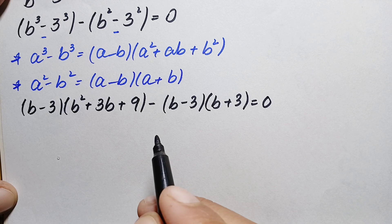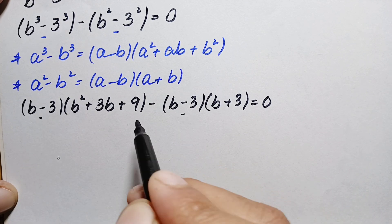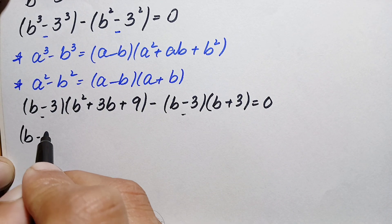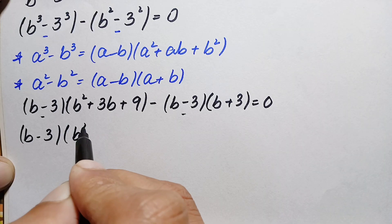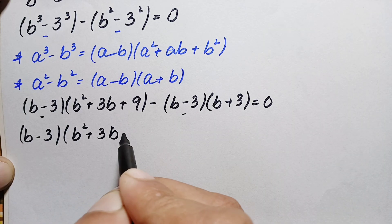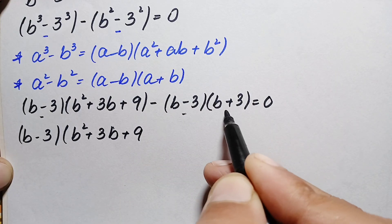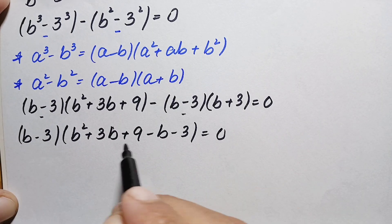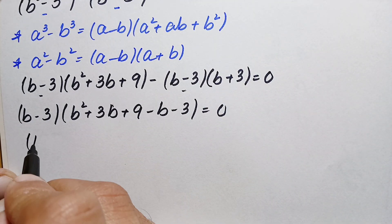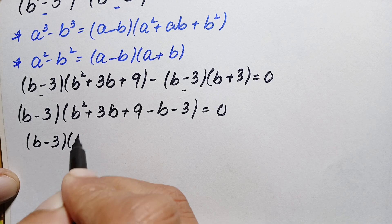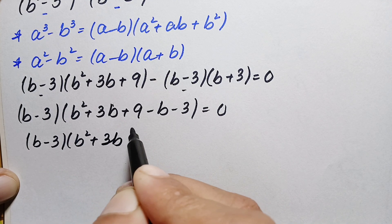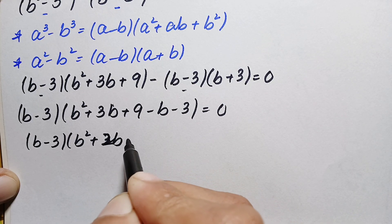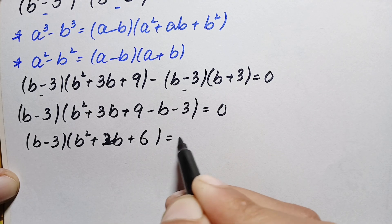Looking at both terms, b minus 3 is common, so we factor it out. Taking b minus 3 common, this becomes b minus 3 times open bracket b squared plus 3b plus 9 minus b minus 3 close bracket equals 0. Simplifying inside: 3b minus b is 2b, and 9 minus 3 is 6, so this becomes b minus 3 times b squared plus 2b plus 6 equals 0.